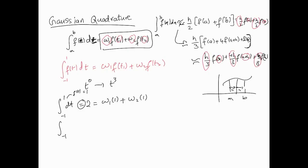For f(t) = t: the integral from -1 to 1 of t dt equals 0, since it's an odd function over a symmetric interval. This gives equation two: w1·t1 + w2·t2 = 0.